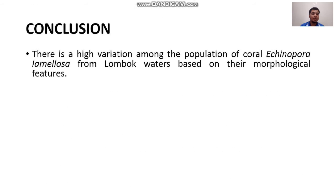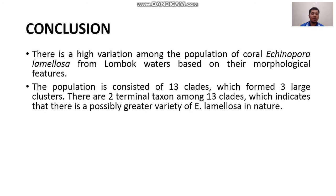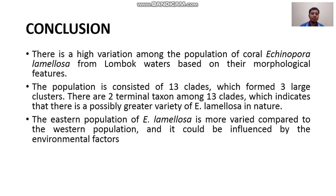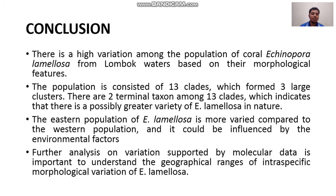In conclusion, there is high variation among the population of coral Echinopora lamillosa from Lombok waters based on morphological features. The population consists of 13 clades forming three big clusters, with two terminal taxa indicating possible greater variety in nature. The eastern population is more varied than the western population, possibly influenced by environmental factors. Further analysis supported by molecular data is important to understand the geographical range of intraspecific morphological variation of this coral species.